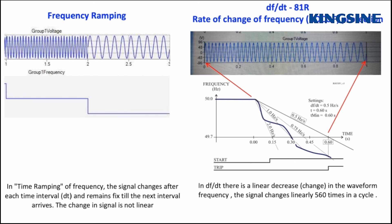On the other side, the DF by DT signal changes linearly 560 times in the cycle.